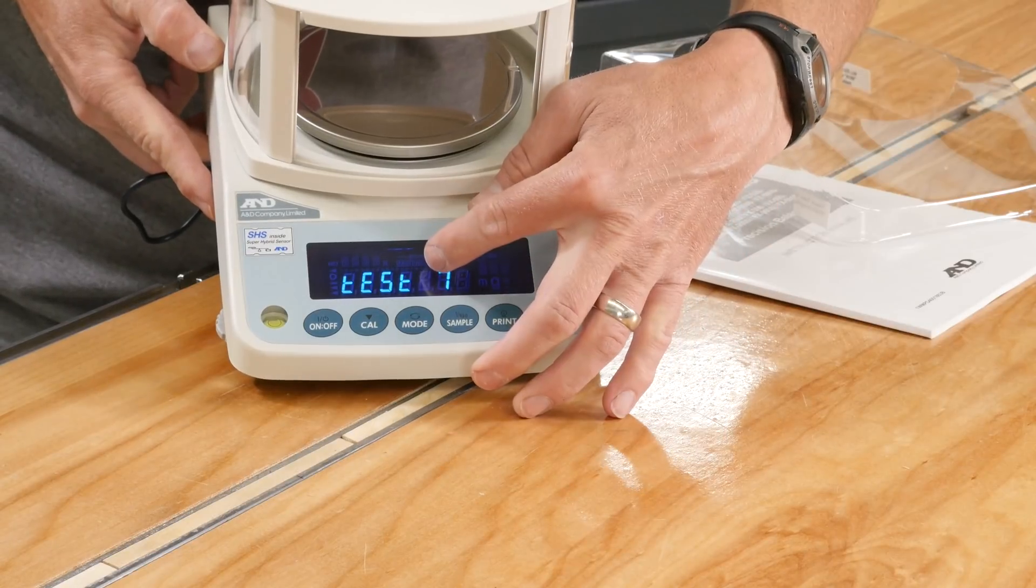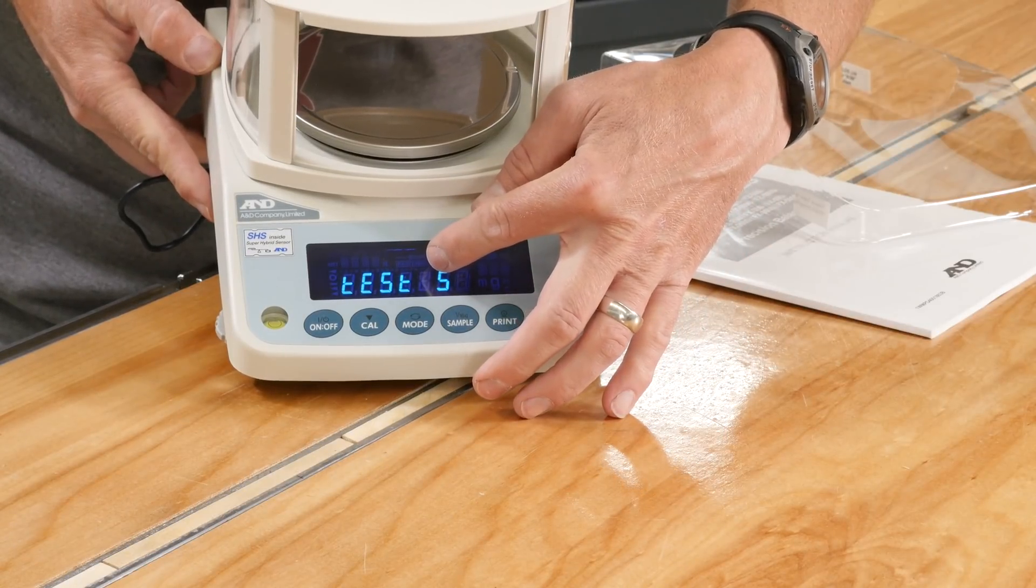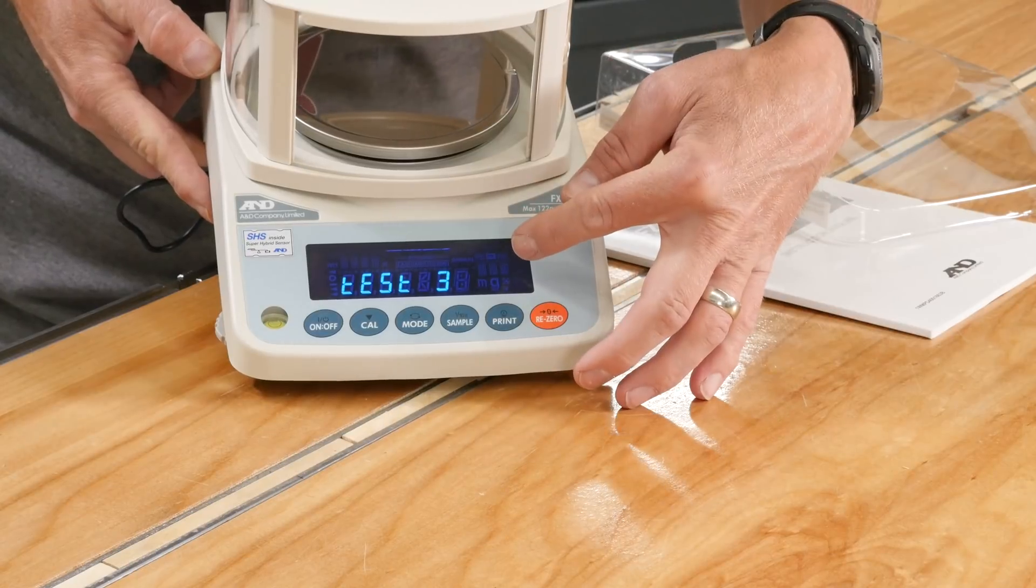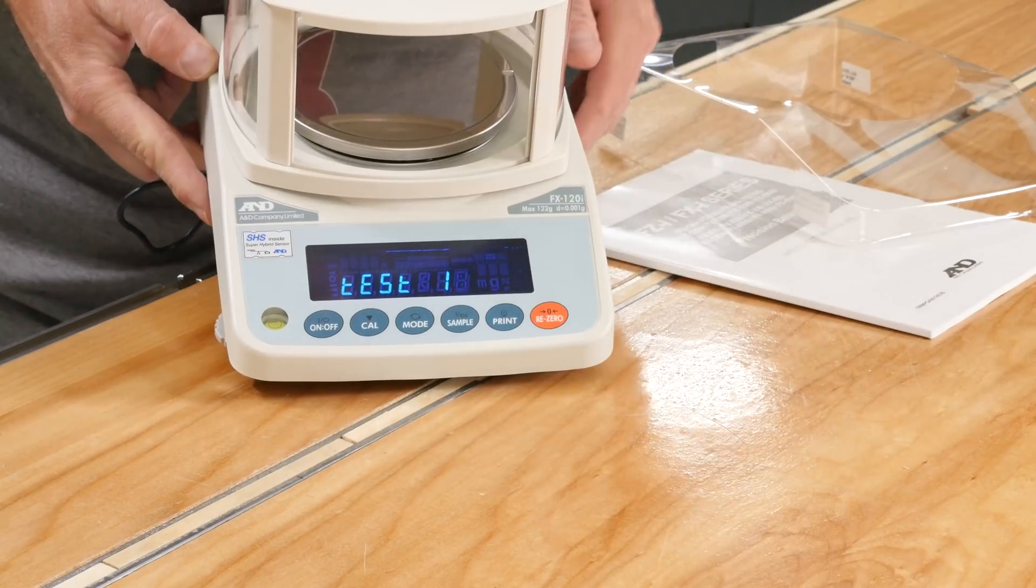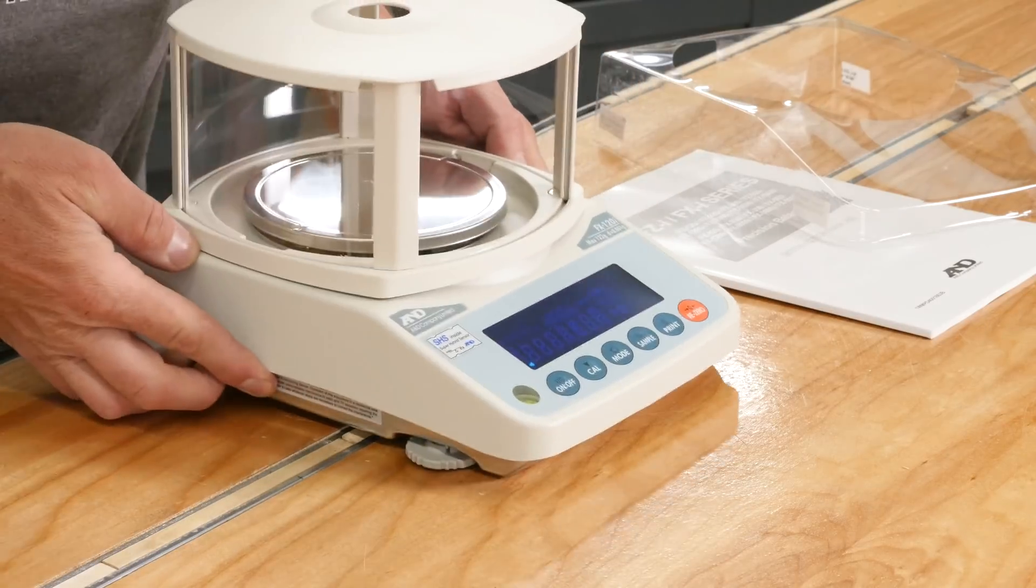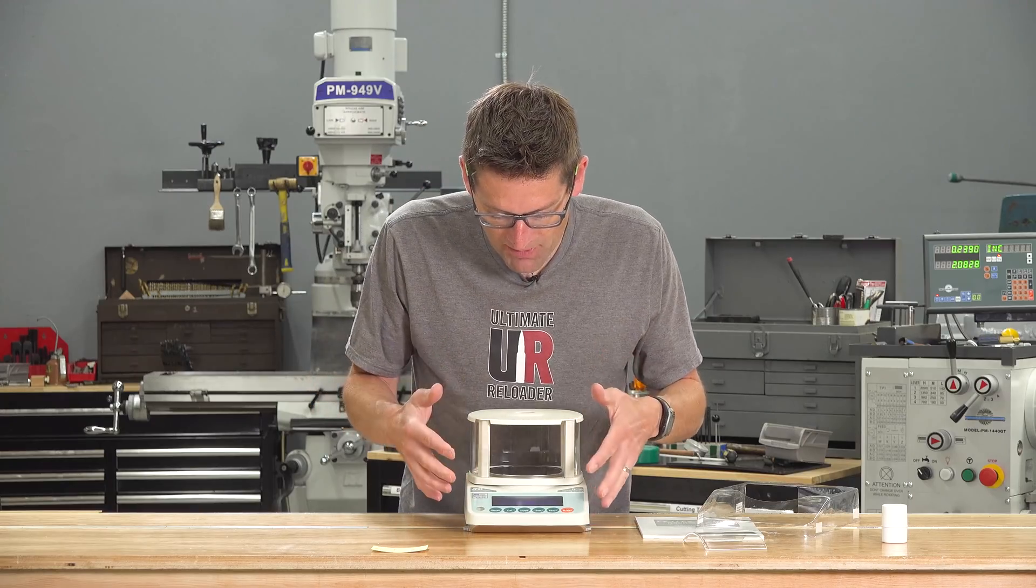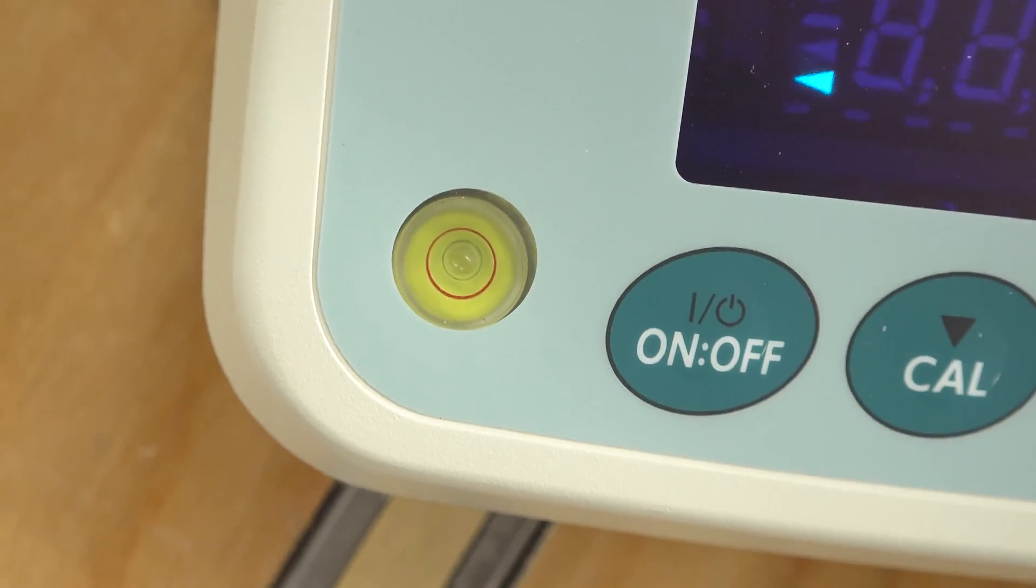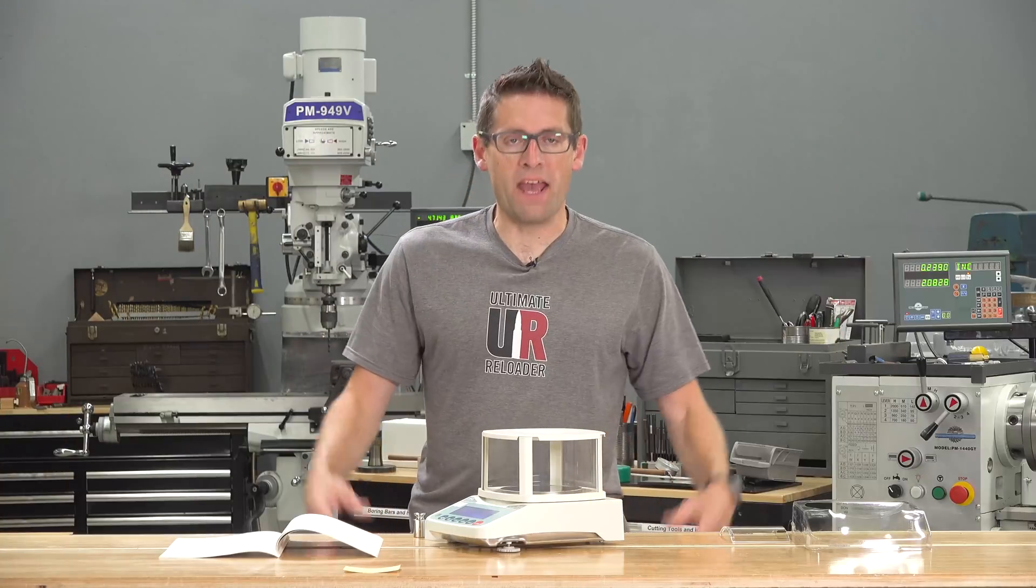This is not an LCD display. This is a special fluorescent display, which is extremely high contrast, as you can see. And what we're going to need to do before we set up and calibrate the scale is get it perfectly level. And there is an integrated bubble level.